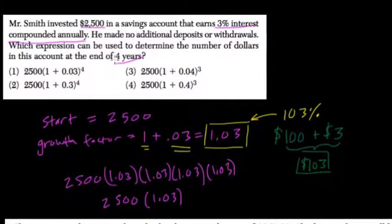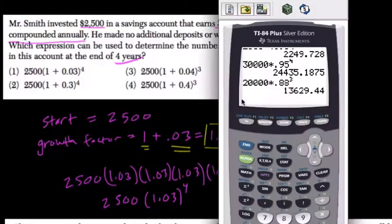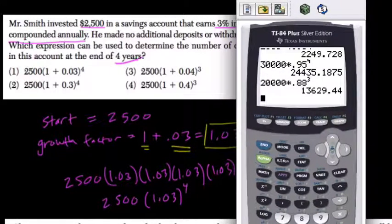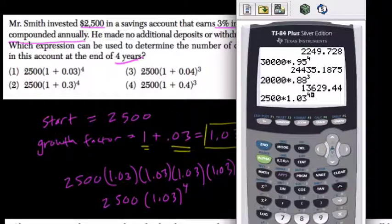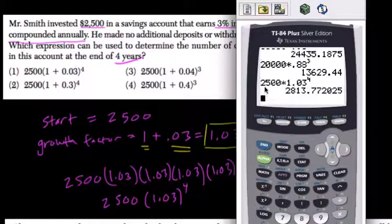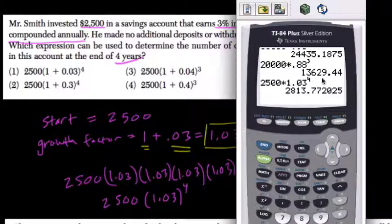So if it's compounding every year and four years are passing, it's compounding four times, or to the fourth power. And you can model this quickly on the graphing calculator with 2,500 times 1.03 to the fourth power.